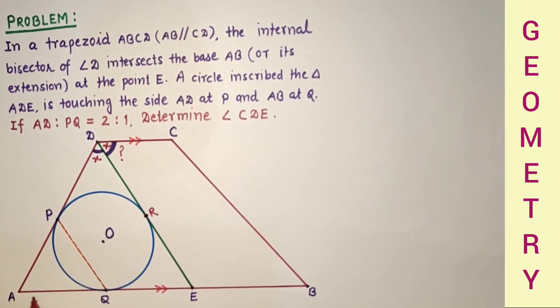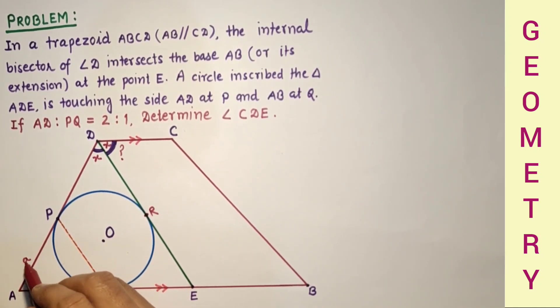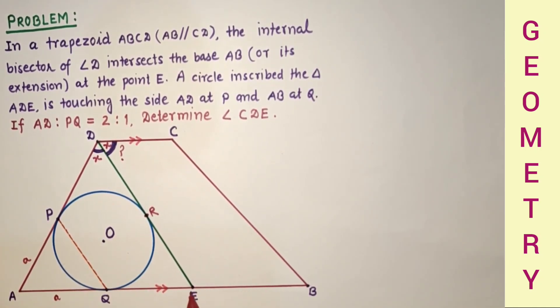Let us suppose the length of segment AQ is A. Because AQ is equal to AP, this is also A. And let us suppose EQ is B. Since EQ is equal to ER, this will also be B.